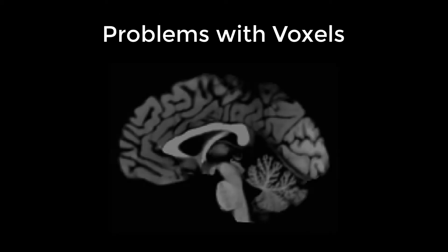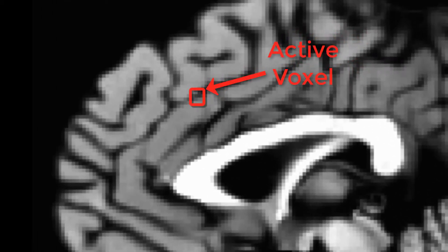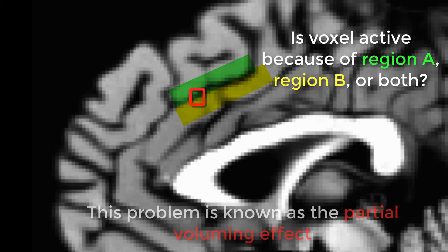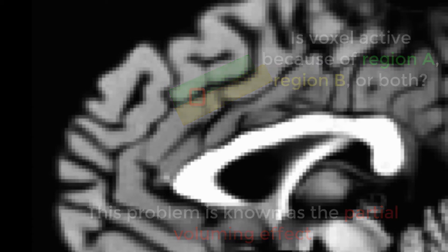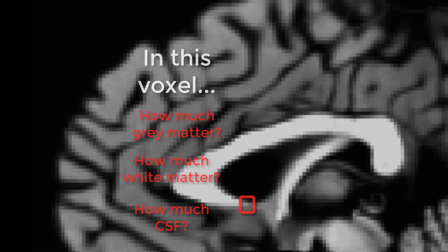This is fine for most fMRI analyses. However, voxels have certain issues. A single voxel can encompass information from two anatomically distinct areas. For example, if a single voxel encompasses two distinct gyri, this can make localization of fMRI activation much less accurate. Another problem is that with voxels and volumetric data, it's much harder to estimate structural properties, such as gray matter thickness and gray matter volume.